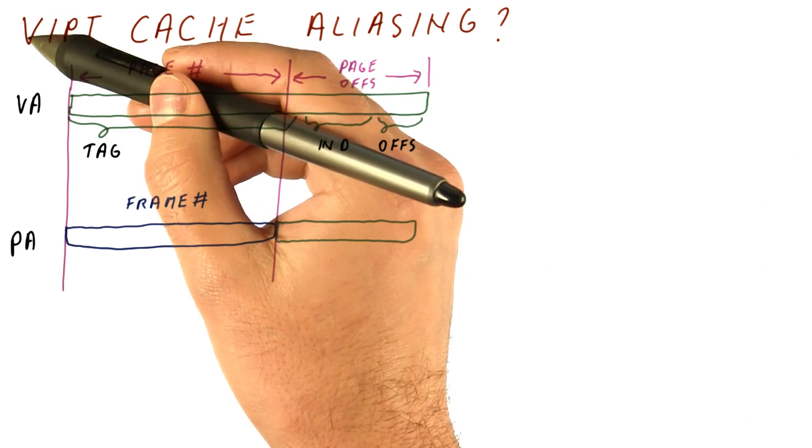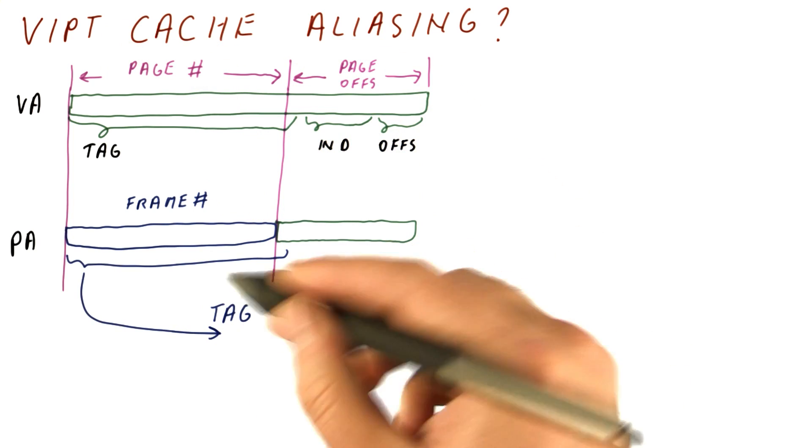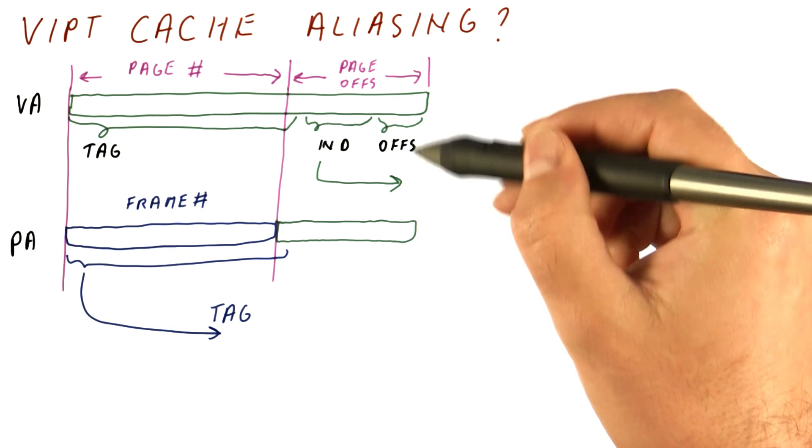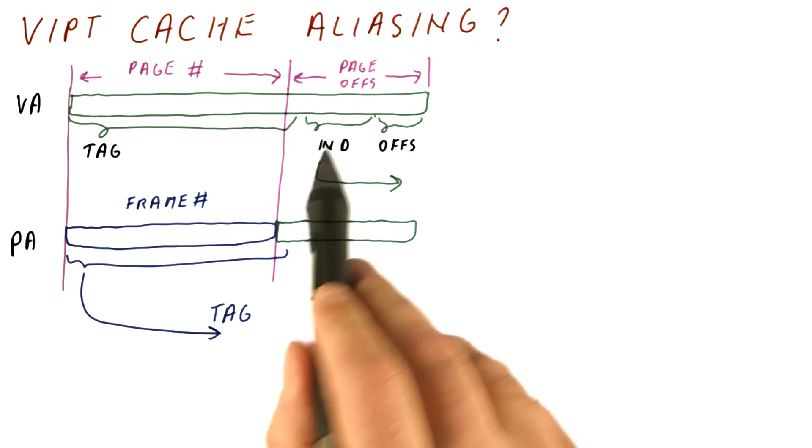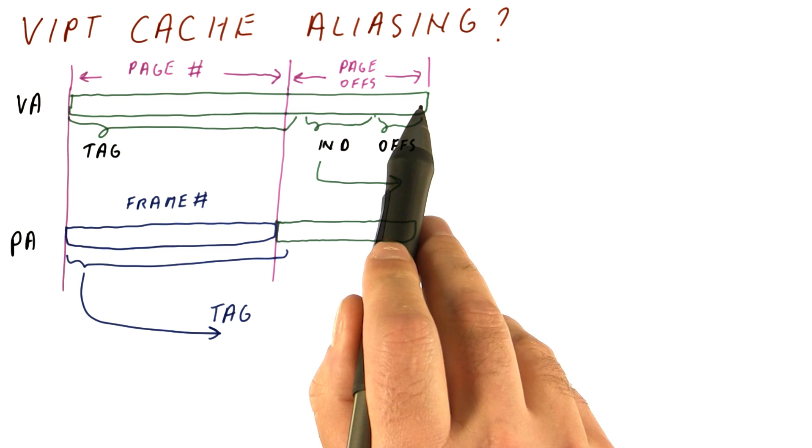And in a virtually indexed, physically tagged cache, our tag comes from here. But our index came from here, so that we could begin the access quickly. The thing to note is that the index bits are relatively close to the least significant bit of the virtual address, and that the page offset has a number of bits.